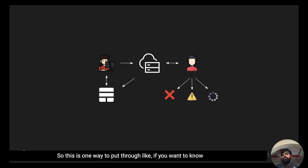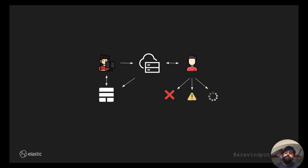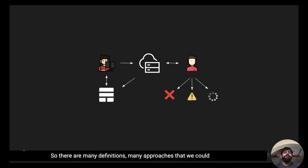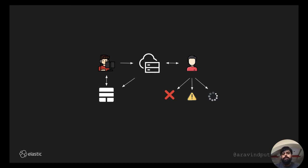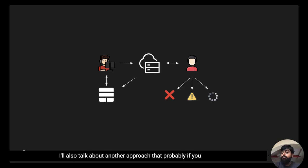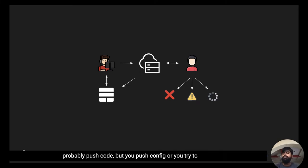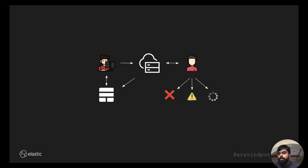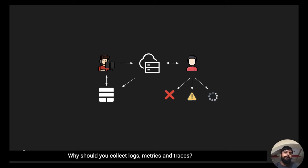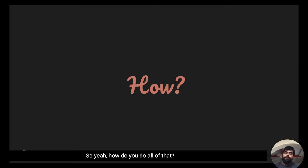If you want to know what's happening in the internal state of an application, that is called observability. There are many definitions and approaches. I'll also talk about the system engineering point of view — if you don't push code but push configs or maintain systems, why should you collect logs, metrics, and traces, and why would it matter?